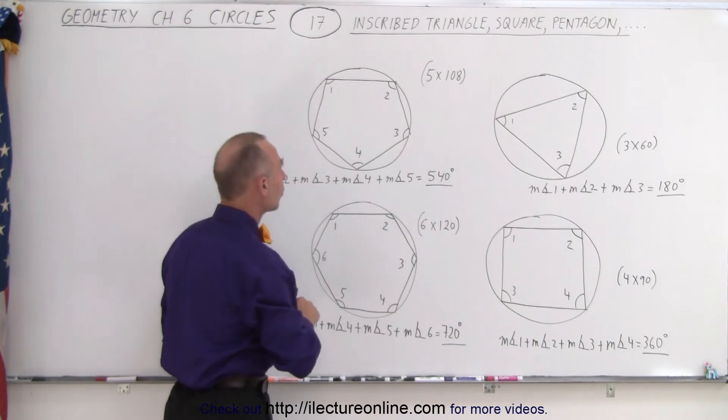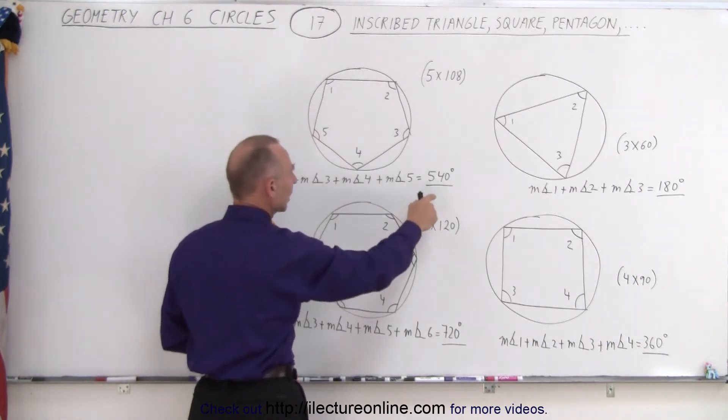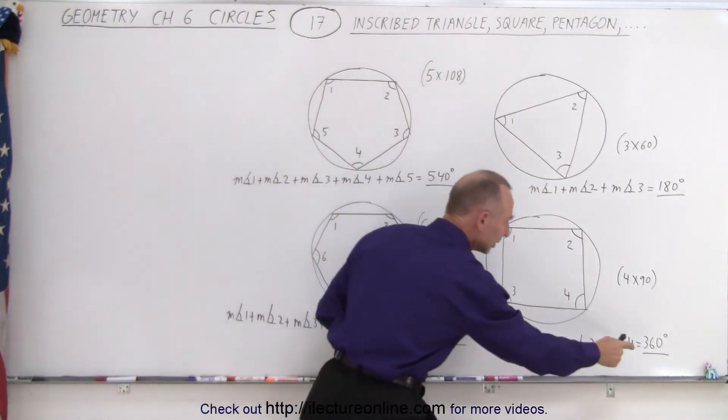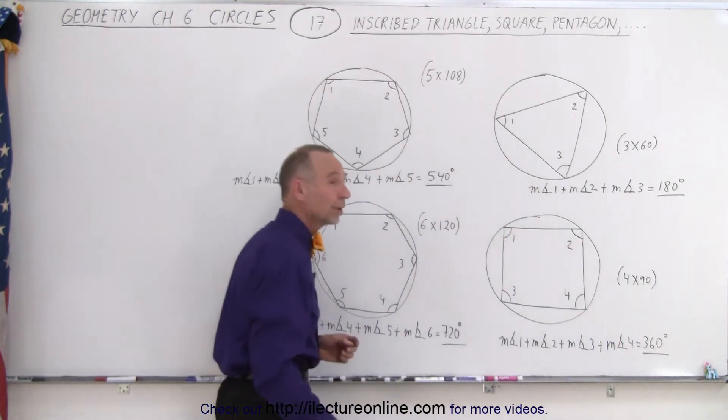In the case of a pentagon, notice when we add the five angles together we end up with 540 degrees, which is again 180 degrees more than 360.